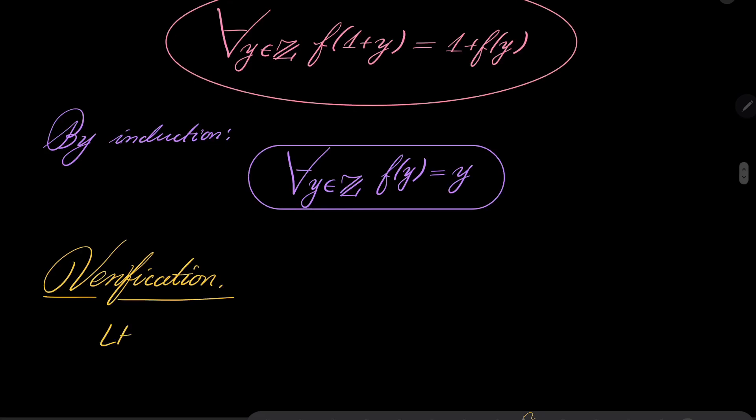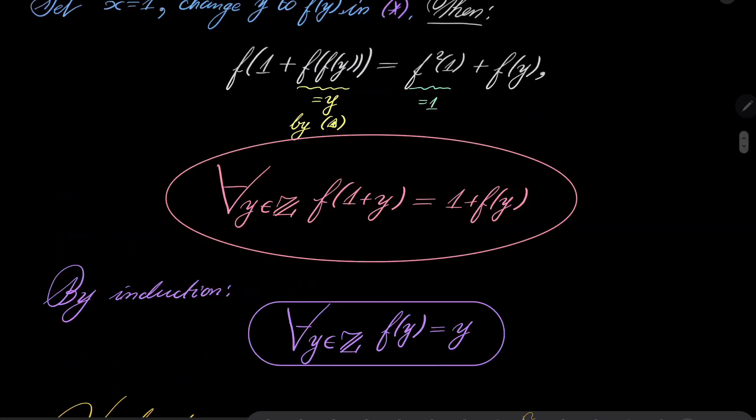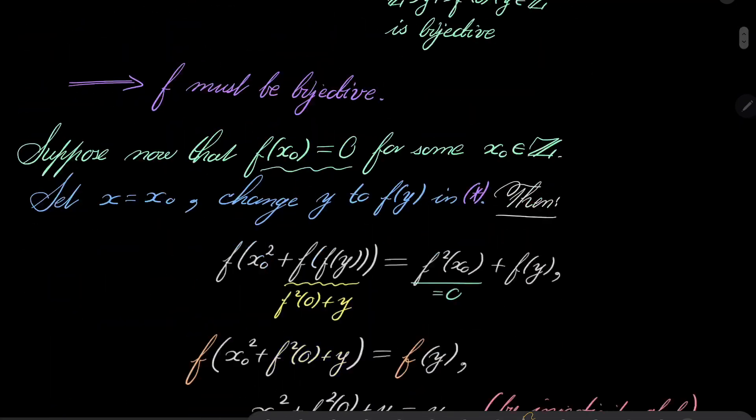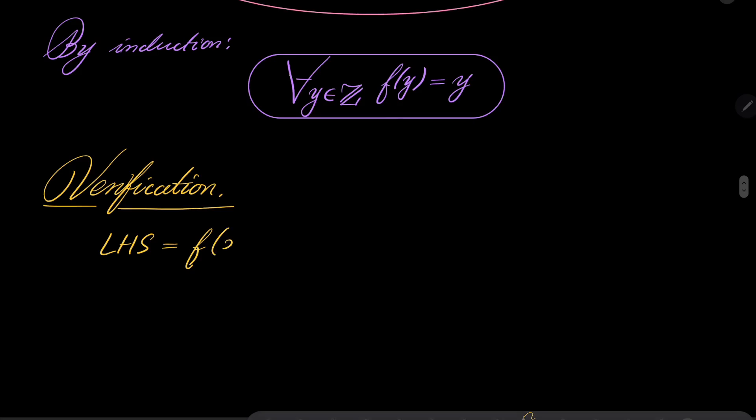So let's compare the left-hand side and the right-hand side. On the left-hand side we have f of x squared plus f of y, so it's x squared plus y of course, and on the right-hand side we have f squared of x plus y and of course it's the same.